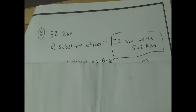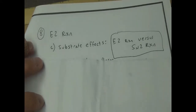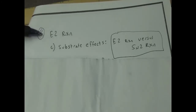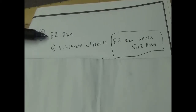Hey everybody. We're continuing and probably finishing chapter 7 today. Like I've done in the last couple lectures, I'll do a quick review of a couple of the key topics from the last lecture. A big one was that when you have the E2 reaction, which makes alkenes through a base-mediated elimination, we make alkenes using bases.